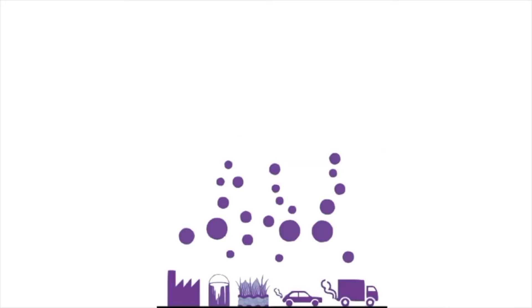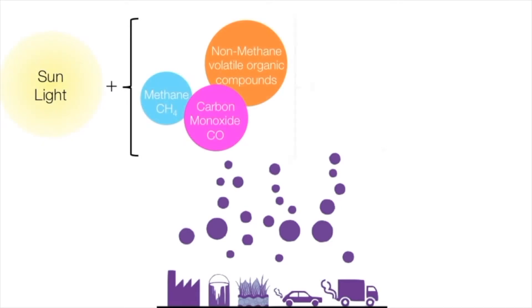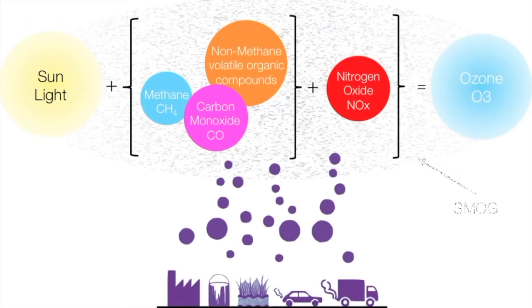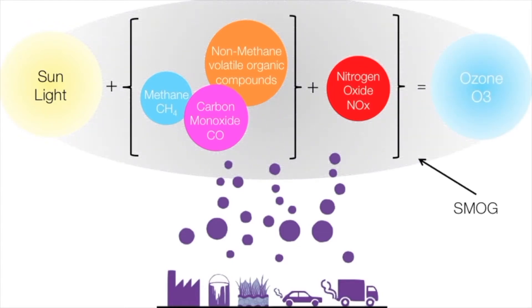Tropospheric ozone is different because it is made as a direct consequence of smog. No smog, no tropospheric ozone. It is a direct byproduct of smog pollution, mainly seen over major cities across the world.